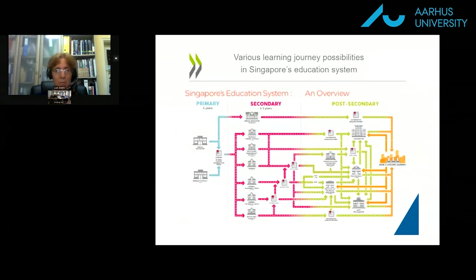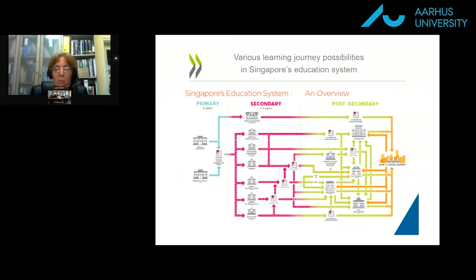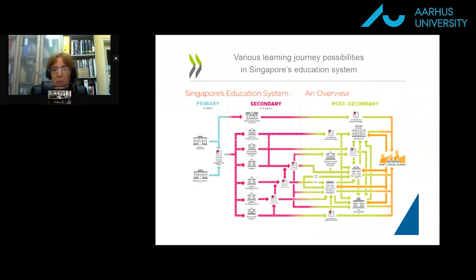Another approach is various learning journeys, where students choose from different options across school years. For example, Singapore has two options for primary school and seven options for secondary school. Each learning path may emphasize different subjects — learning path A can emphasize STEM (science, technology, engineering, and mathematics), while learning path B can emphasize the arts. This emphasis is reflected in the number of learning hours devoted to each subject; more hours will be given to STEM subjects in a STEM-focused path.